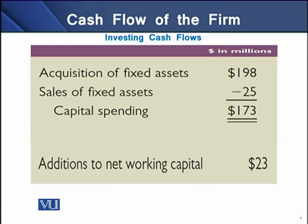The second type of cash flows are investing cash flows. These are the net cash flows related to the acquisition and disposal of fixed assets. There is $198 million in acquisition of fixed assets and $25 million in sale proceeds, so net capital spending is $173 million. Besides this, the firm has also invested $23 million in net working capital, making total investing cash flows $196 million.